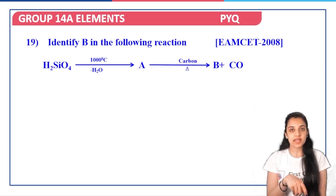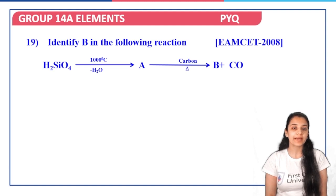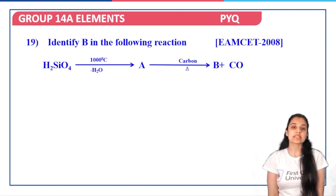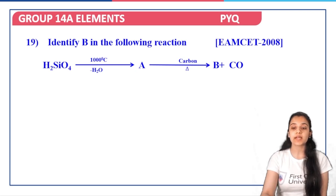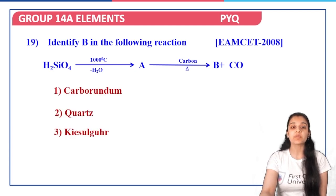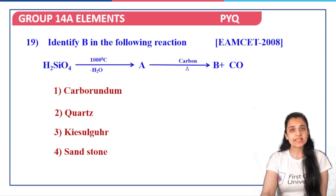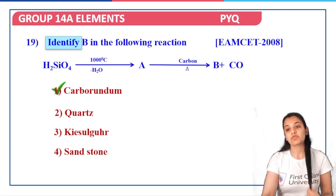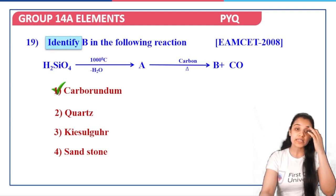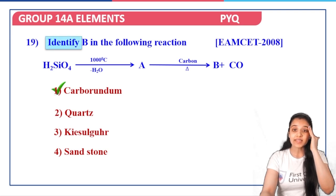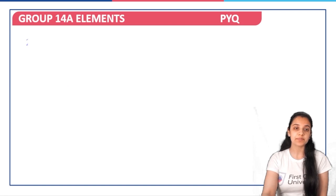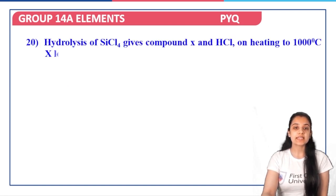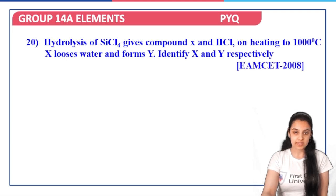Next: identify B in the following reaction. H2SiO4 (i.e., SiO4(2−)), when water is lost at 1000°C, gives A. On reduction of A with carbon and heating, we get CO and product B — which is carborundum, kieselguhr, or sandstone? This is one of the methods of preparation of carborundum, which is an allotrope or form of silicon carbide. Option one — carborundum — is the correct answer. Jot this down in your notes.